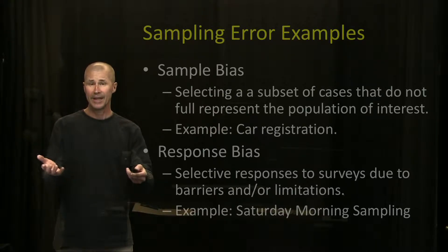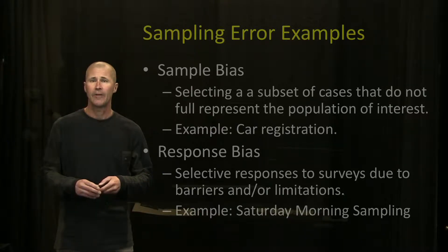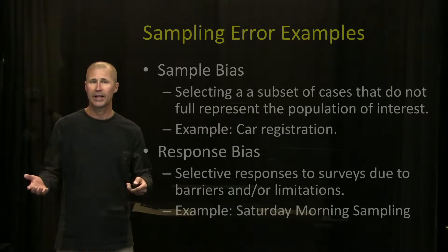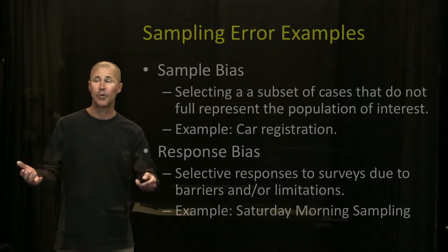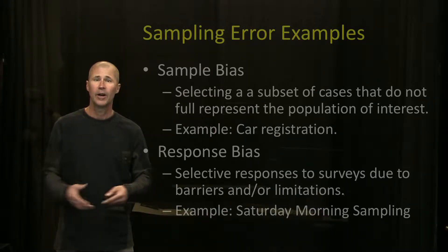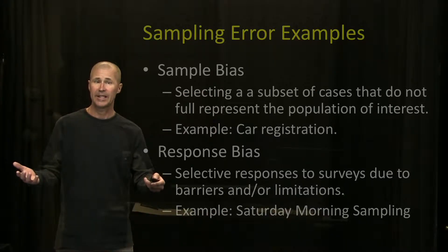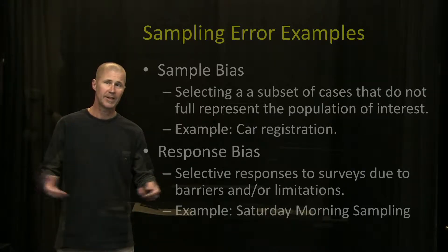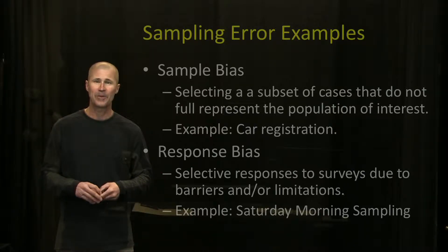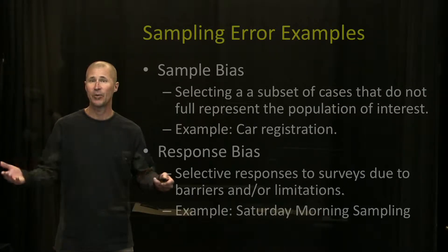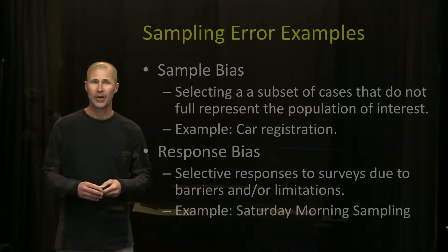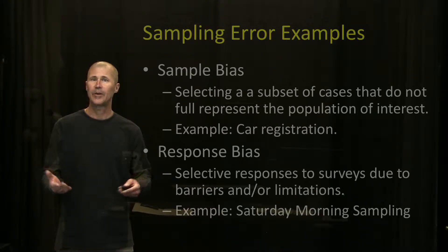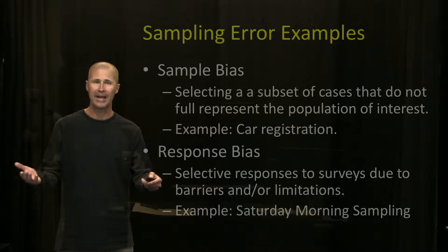Well, back in the 1930s, far more Republicans owned cars than Democrats. So when they asked who they were going to vote for, the respondents overwhelmingly said Republican. They reported this result, but in the actual election FDR won by a landslide — a Democrat. So you can see there was a clear sample bias here.